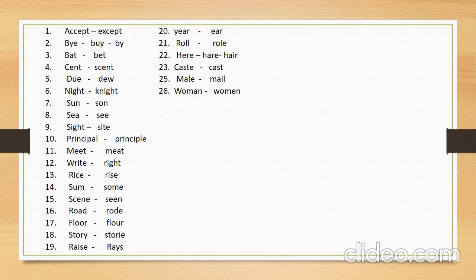Number eight: 'sea' (samundar — ocean), and its similar in sound word is 'see' (dekhna — to see). Number nine: 'sight,' meaning nigah — eyesight, for example eyesight. Its similar in sound word is 'site,' meaning the place where construction work is going on. Number ten: 'principal,' meaning head of the department. Its similar in sound word is 'principle,' meaning rule — usool.